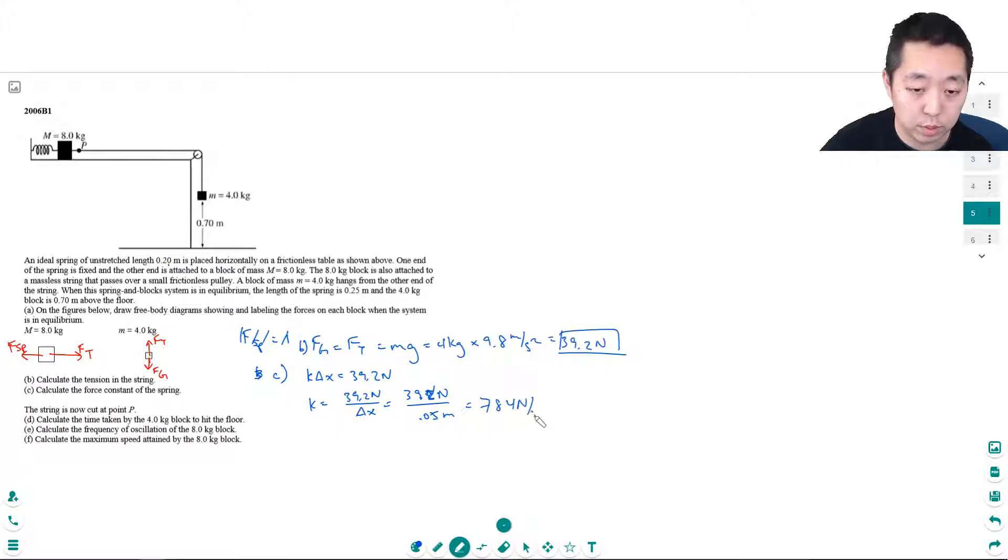The string is now cut at point p, so now we've cut this string. Calculate the time taken by the four kilogram block to hit the floor.